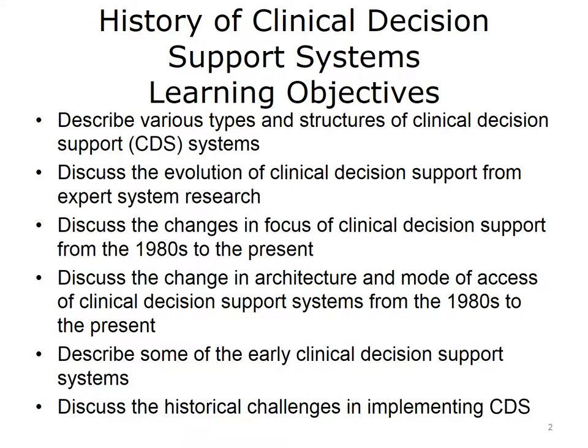The objectives for this unit, History of Clinical Decision Support Systems, are to describe various types and structures of clinical decision support, or CDS, systems. Discuss the evolution of clinical decision support from expert system research. Discuss the changes in focus of clinical decision support from the 1980s to the present, and the change in architecture and mode of access of clinical decision support systems from the 1980s to the present. Describe some of the early clinical decision support systems. Discuss the historical challenges in implementing CDS.